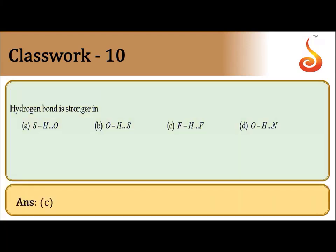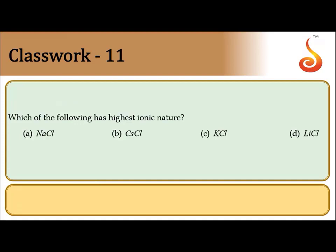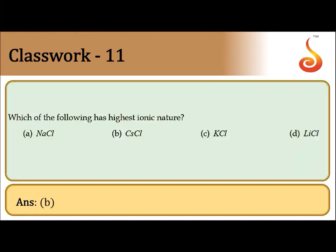Which of the following has the highest ionic character? All the options have the same anion, Cl⁻, so we need to compare the cations. The larger the cation, the higher the ionic character. Among Na⁺, Cs⁺, K⁺, and Li⁺, Cs⁺ is the largest, so CsCl has the highest ionic character. The answer is option B.